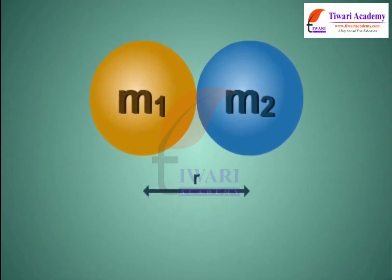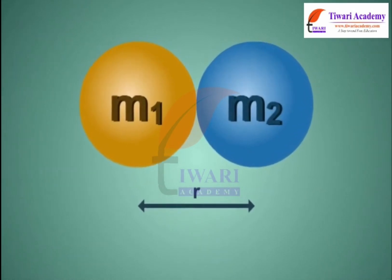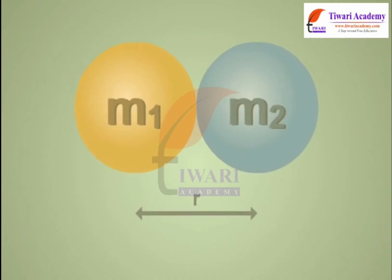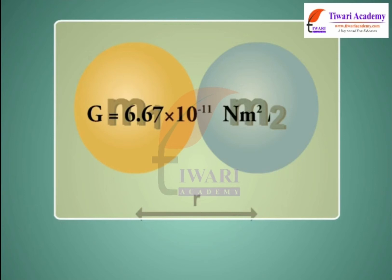The value of the universal gravitational constant is G equal to 6.67 × 10⁻¹¹ Nm² per kg².